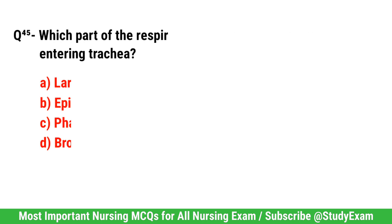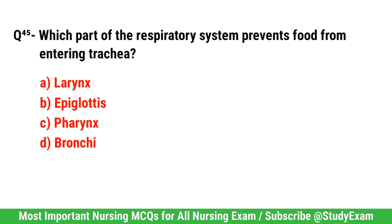Question number 45. Which part of the respiratory system prevents food from entering trachea? Correct option is B. Epiglottis.